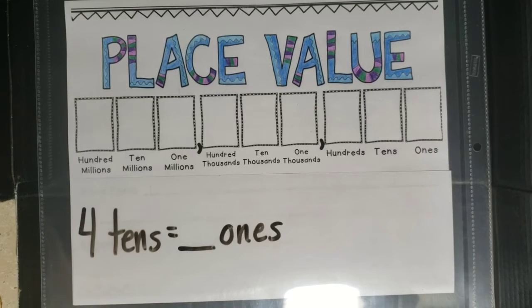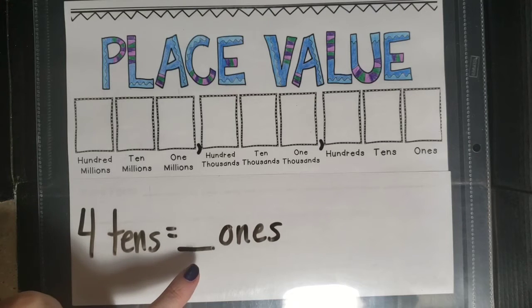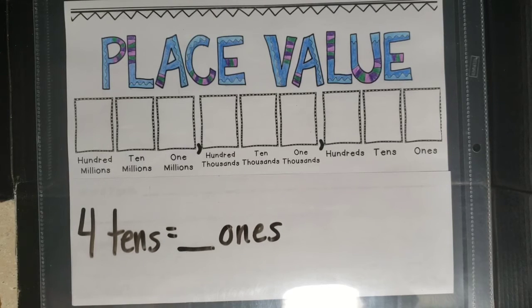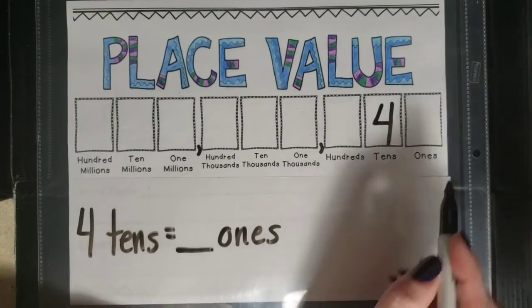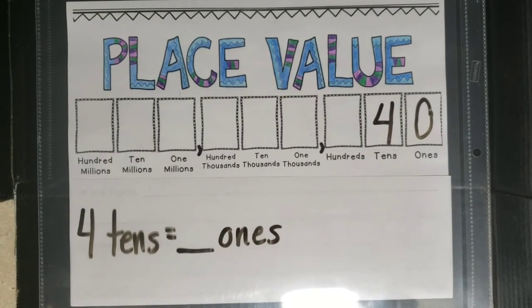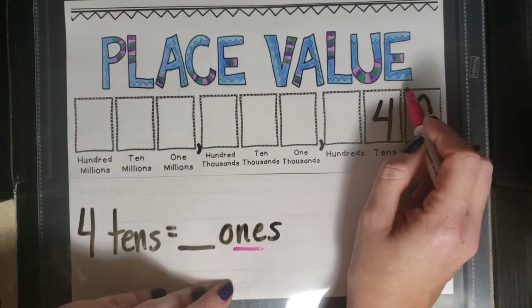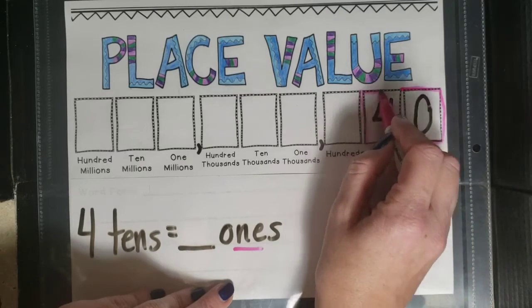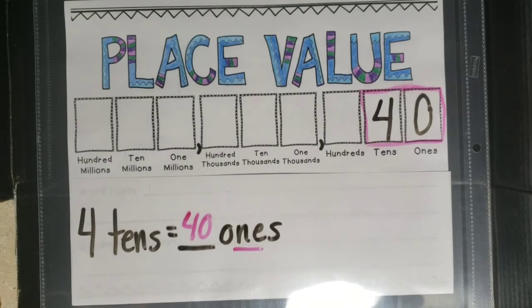Let's step away from the thousands. We have four tens equals an unknown number of ones. So four tens — I know four tens is forty, just like four times ten equals forty. I'm converting to ones, so I draw the box and extend to the left. Four tens equals forty ones.